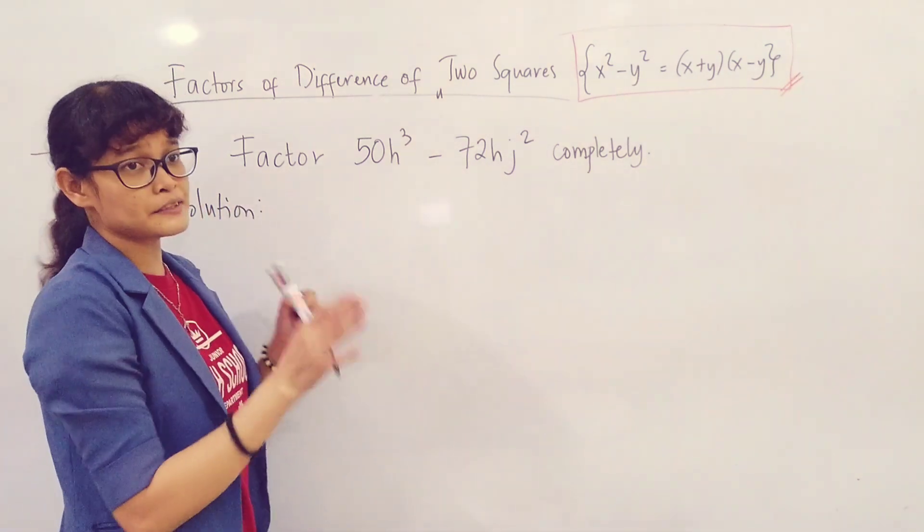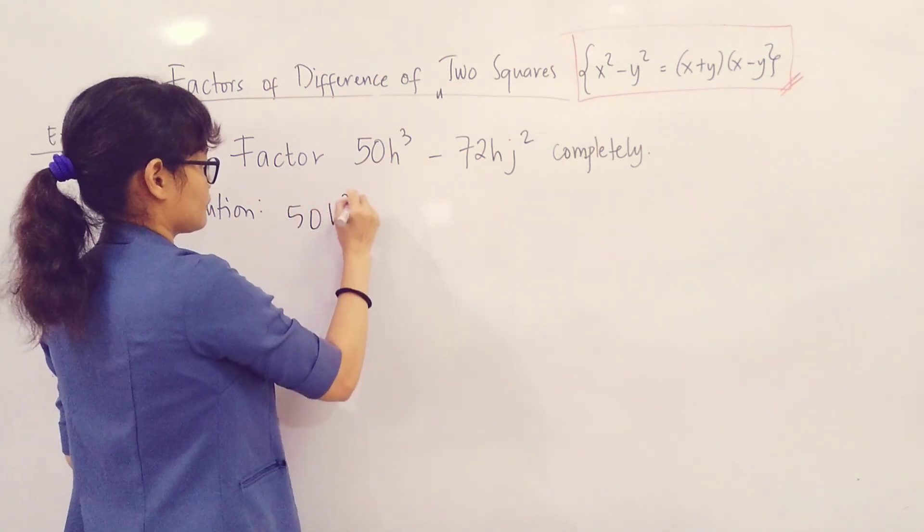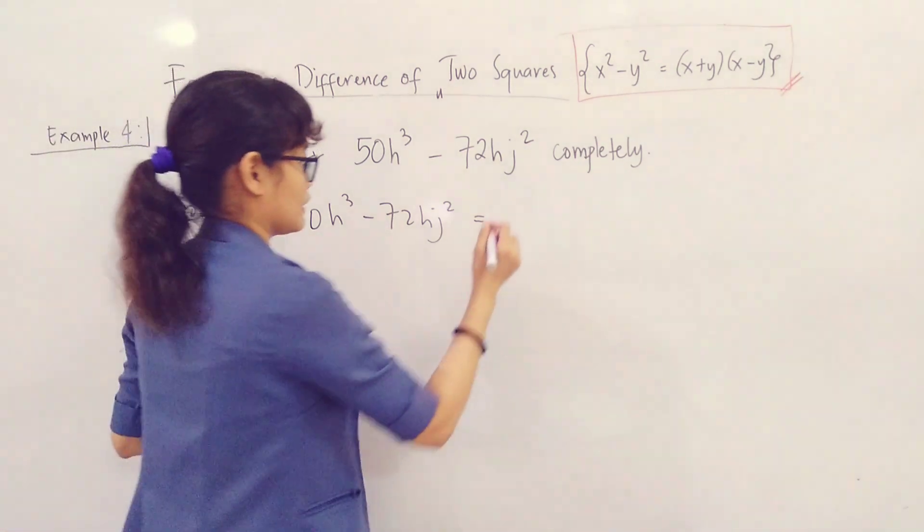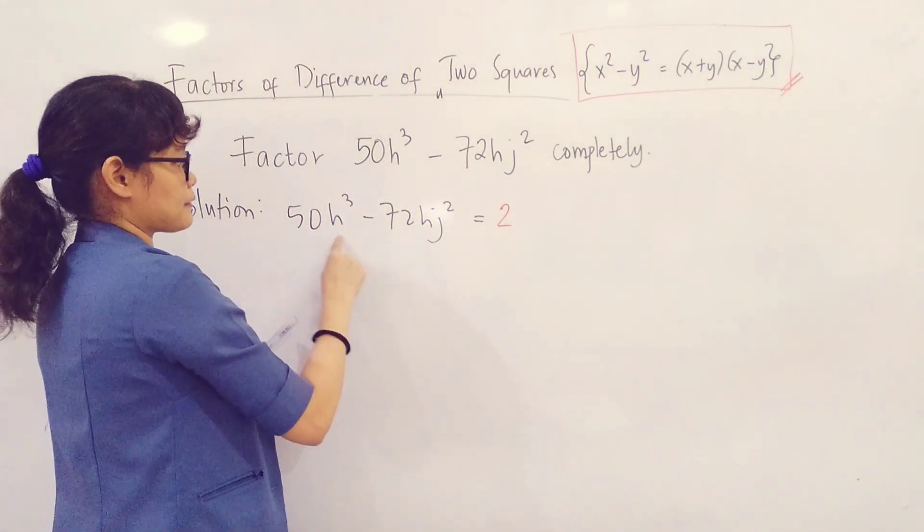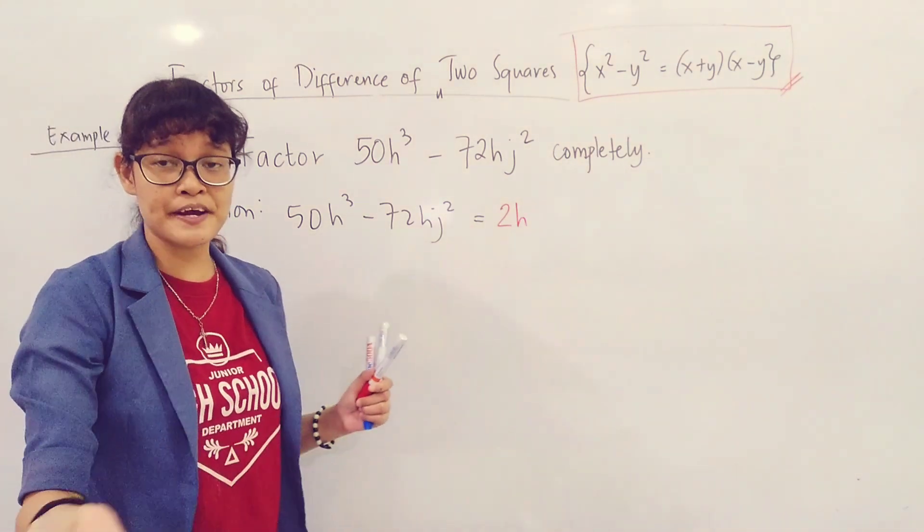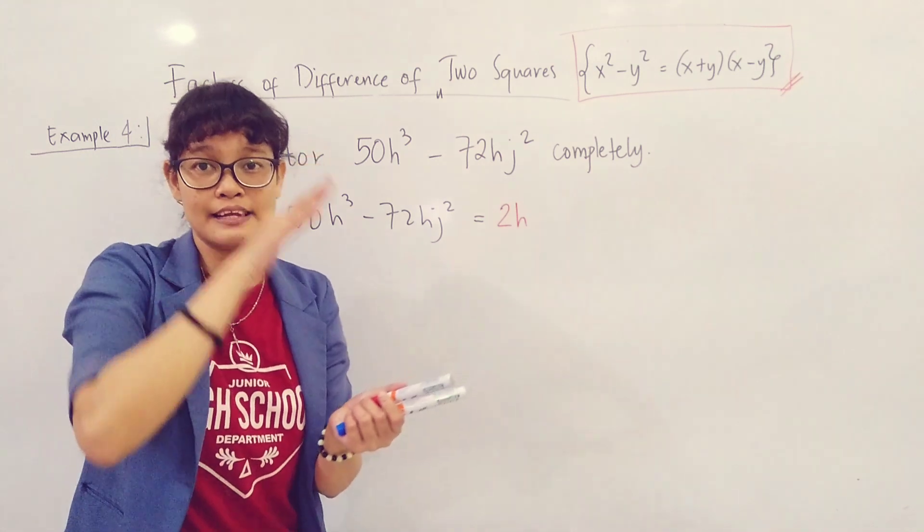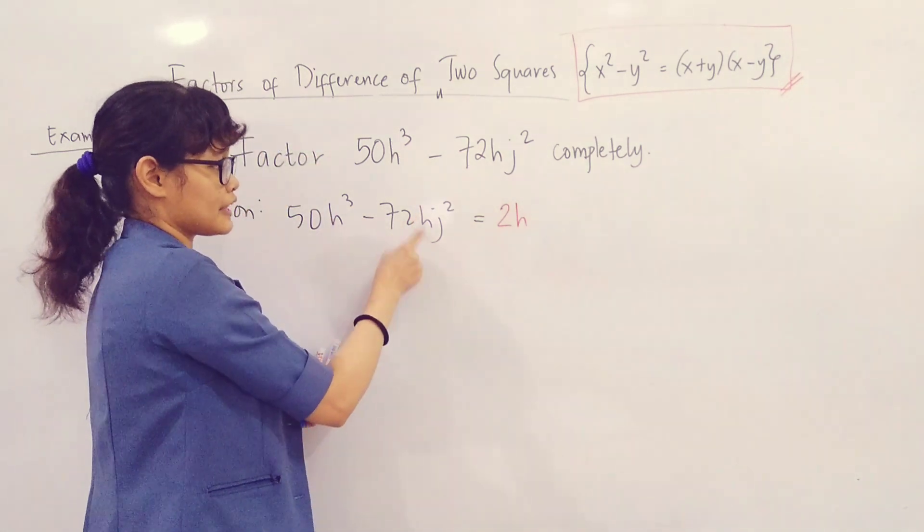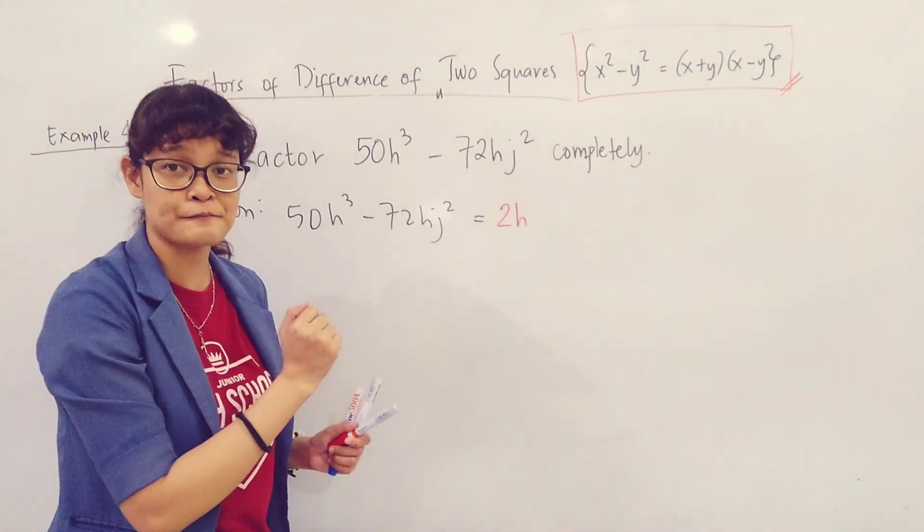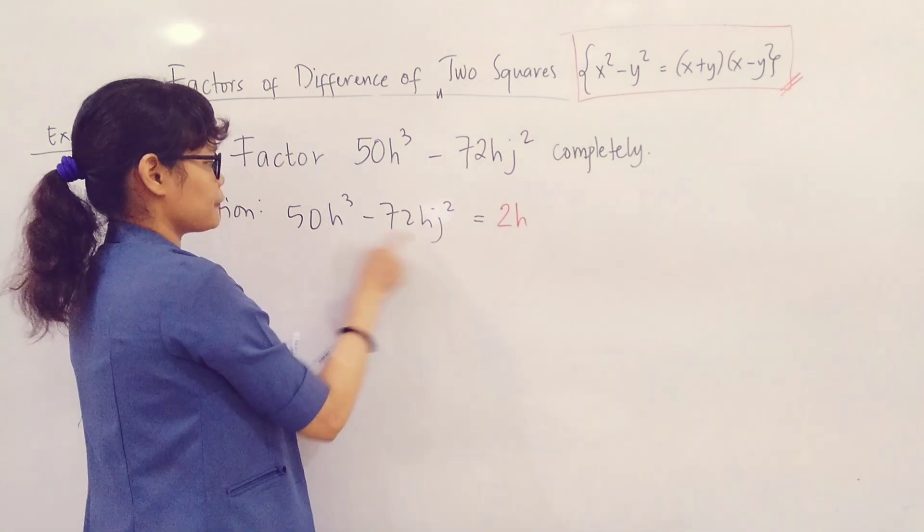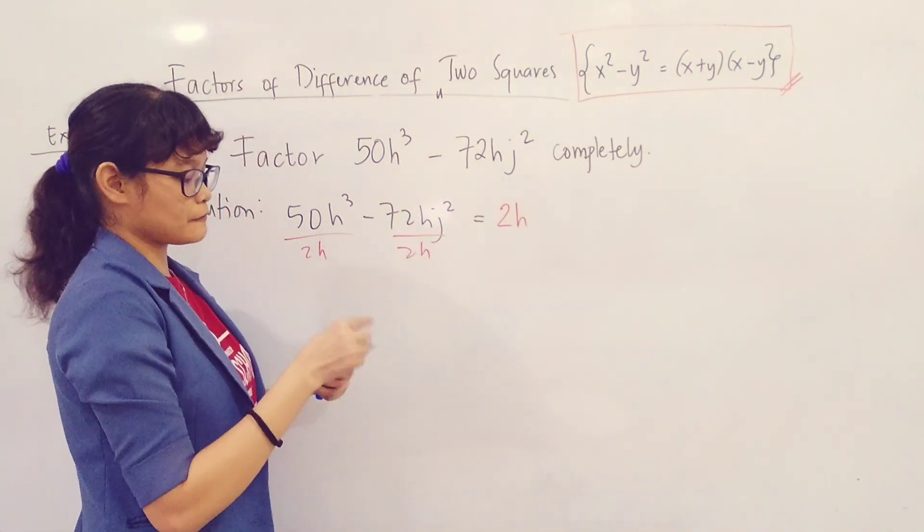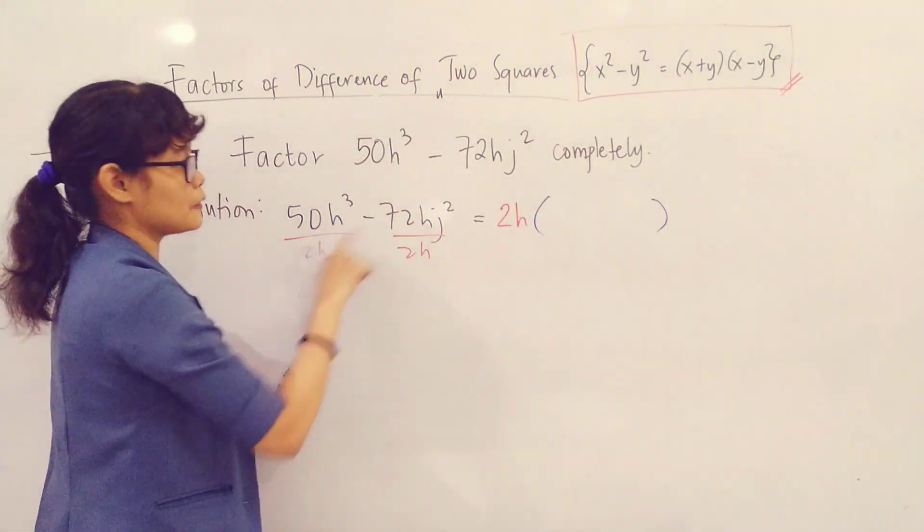We have 50H cubed minus 72H squared. What is the greatest common factor of 50 and 72? The common factor of 50 and 72 is equal to 2. Next, what about H cubed and H? The greatest common factor between these two is H. Don't forget - when it's GCF of variables we're talking about, you will always get the variable with the least exponent. Between H cubed and H, H is lower, so it's the GCF. Now using this greatest common monomial factor, we are going to get the value of the remaining factor. All we have to do is to divide both terms by whatever our GCF is.